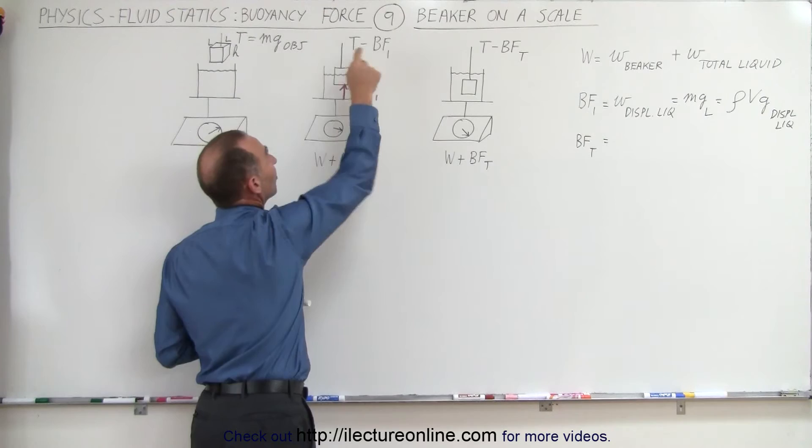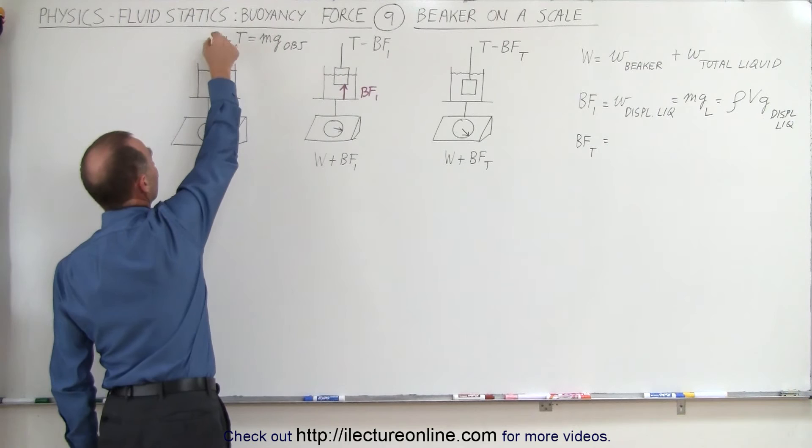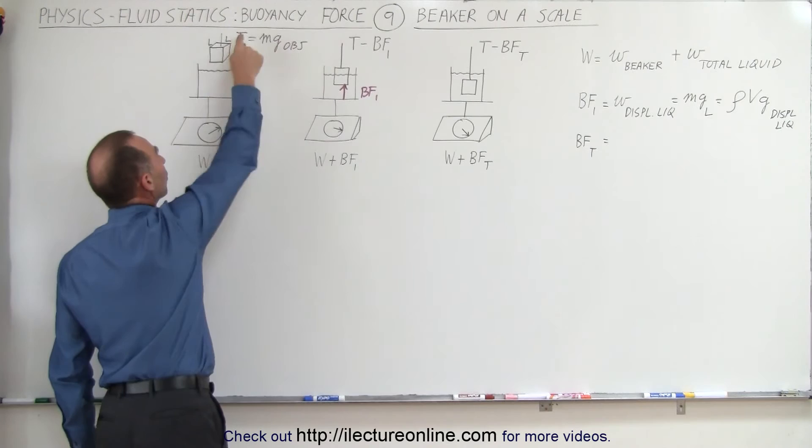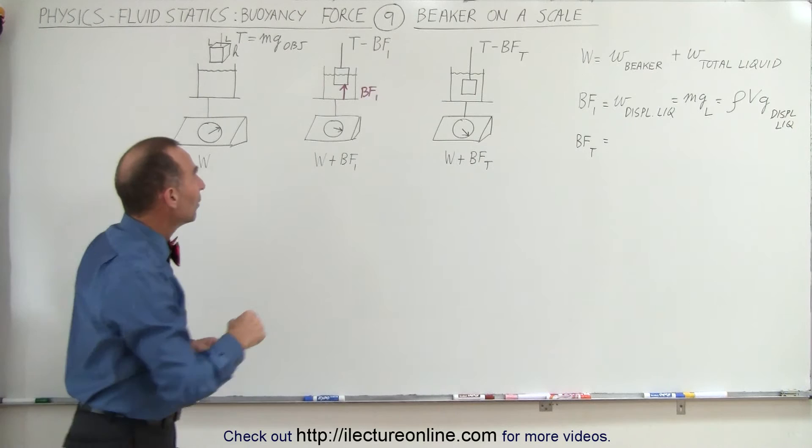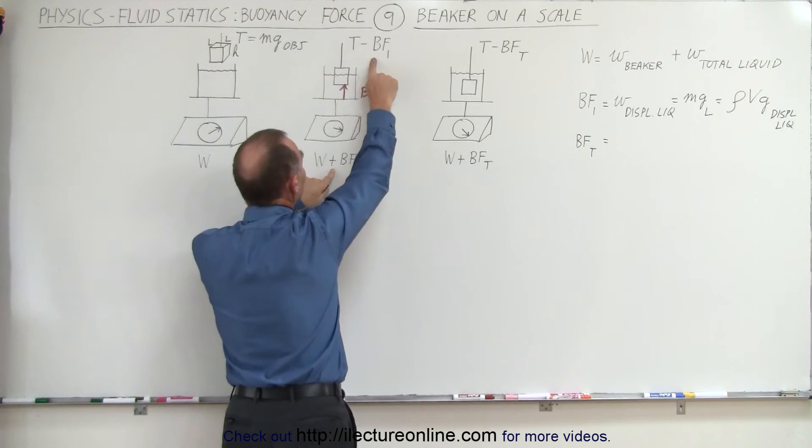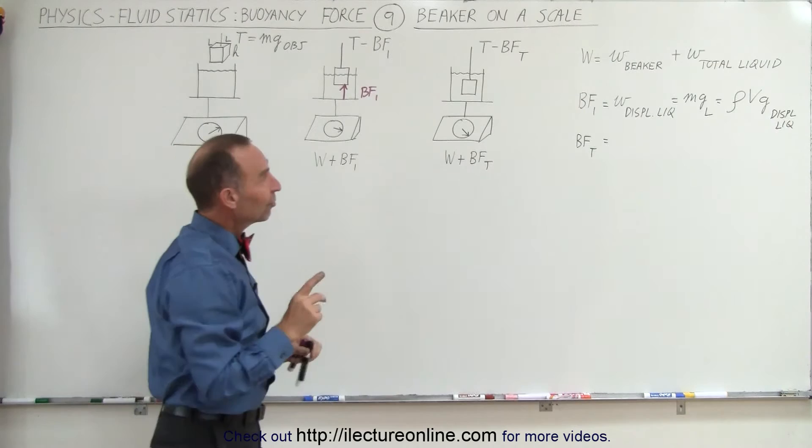The tension as measured on the string and the weight on the scale — those two combined will always equal the same amount together. It's always going to be t plus w. Notice that when we add these two together, we again get t plus w, because the minus bf1 here cancels out the plus bf1 there.